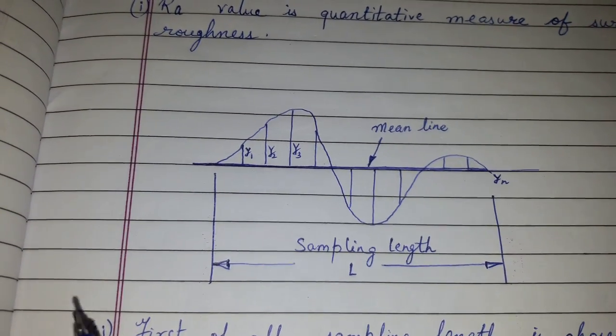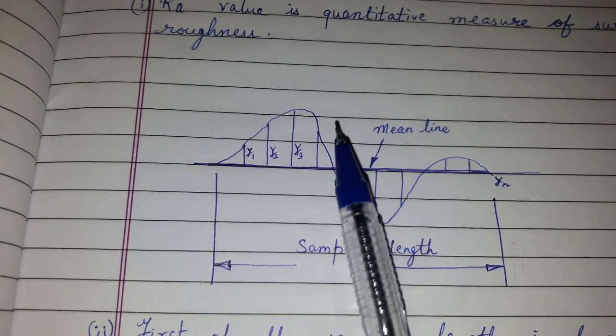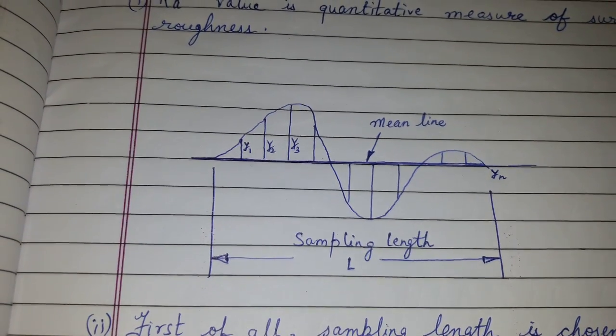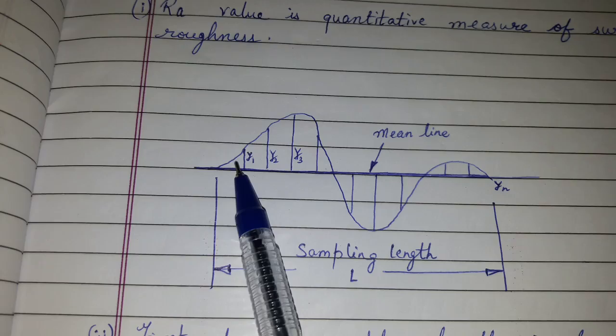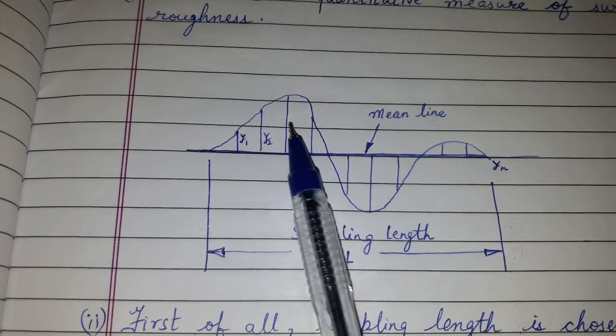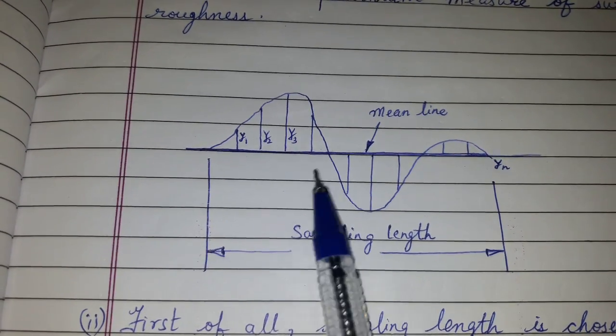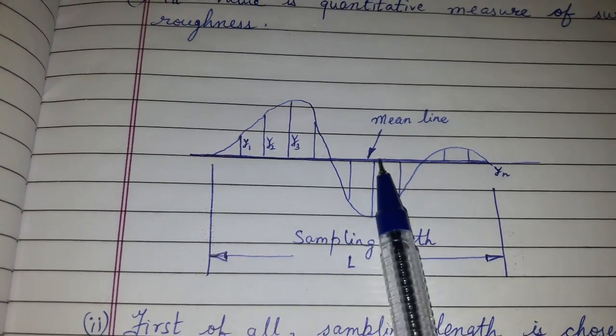Then the deviation—see, these are the deviations. If you measure, so if this is the mean line, these are the deviations from the mean line, up and down.